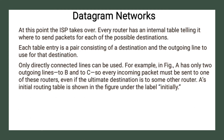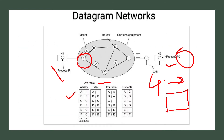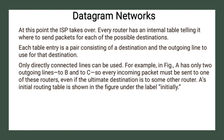At this point the internet service provider takes over. Every router has an internal table telling it where to send packets for each possible destination. Each table entry is a pair consisting of a destination and the outgoing line to use for that destination. Only directly connected lines can be used.